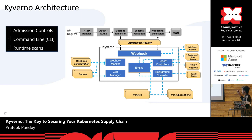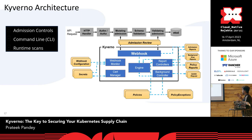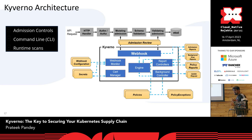There are different components: admission reports, background scan reports — which are generated when you're not enforcing policies — and update requests. Update requests is the generate mechanism, a background controller that looks at resources and acts on patterns or kinds, for example a namespace, based on the namespace and policy rule.